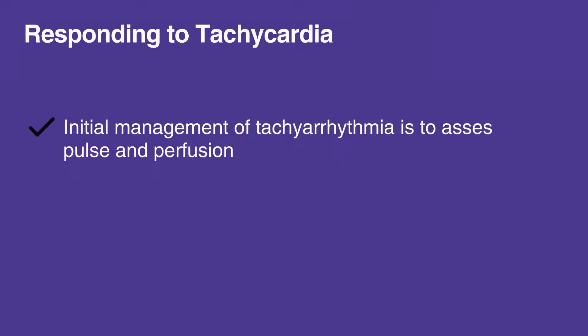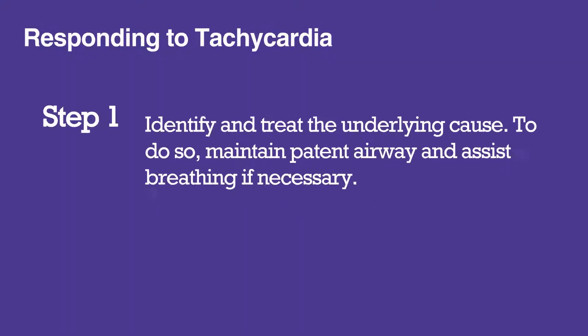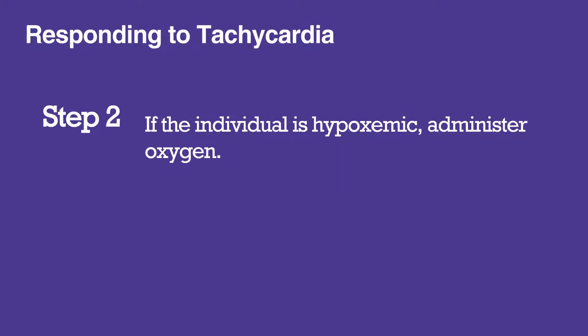The initial management of tachyarrhythmia is to assess pulse and perfusion. First, identify and treat the underlying cause. To do so, maintain a patent airway and assist breathing if necessary. If the individual is hypoxemic, administer oxygen.